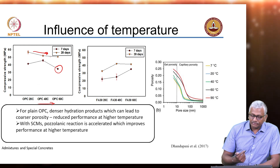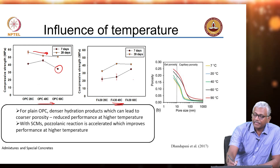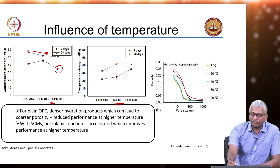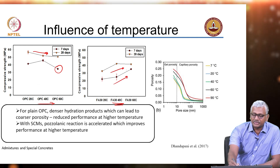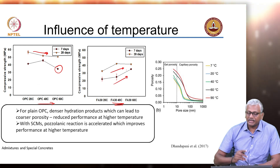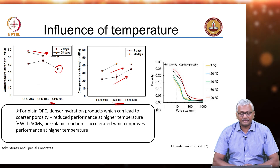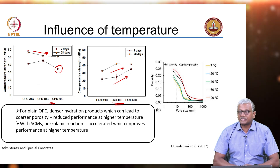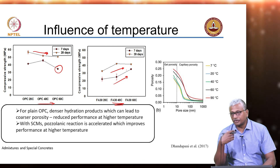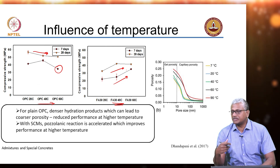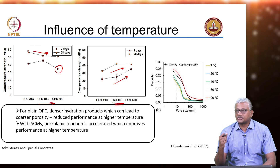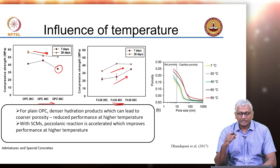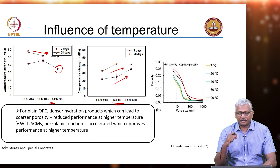In the case of fly ash based systems, when you replace cement with fly ash and cure at high temperatures, you do not really see the negative effects of long term strength regression. That is because the pozzolanic reaction is benefited by the increase in temperature, and you are able to see a significant enhancement in compressive strength because of the pozzolanic reaction.